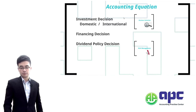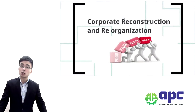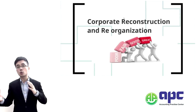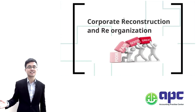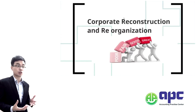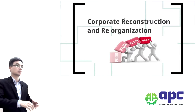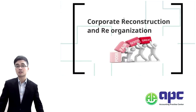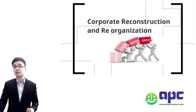Chapter 3 covers corporate reconstruction and reorganisation. Corporate reorganisation means changes in group structure — as studied in Paper P2 (Corporate Reporting) — for example, disposing of 30% of shares, selling off a subsidiary, or selling off assets within a subsidiary to improve organisational performance.